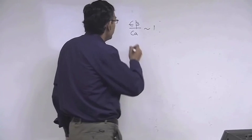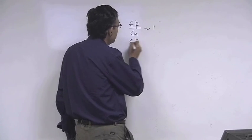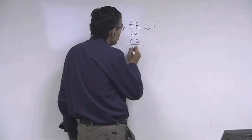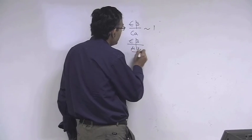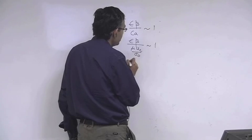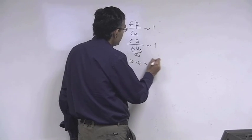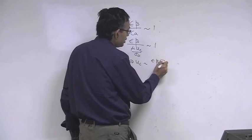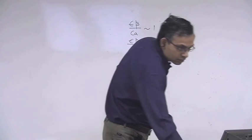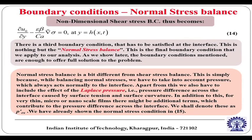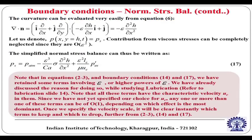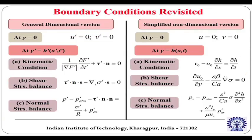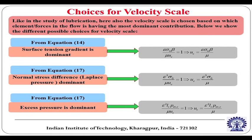So epsilon beta divided by (mu u_c / sigma_0) is of order 1, which means u_c equals epsilon beta sigma_0 / mu. We can get back to the slide where various scales are ascertained: epsilon sigma_0 beta / mu is the surface-tension-gradient-driven velocity scale.